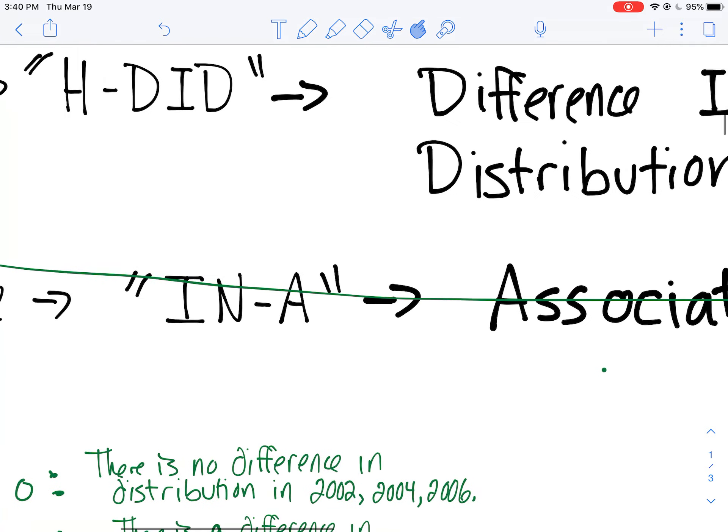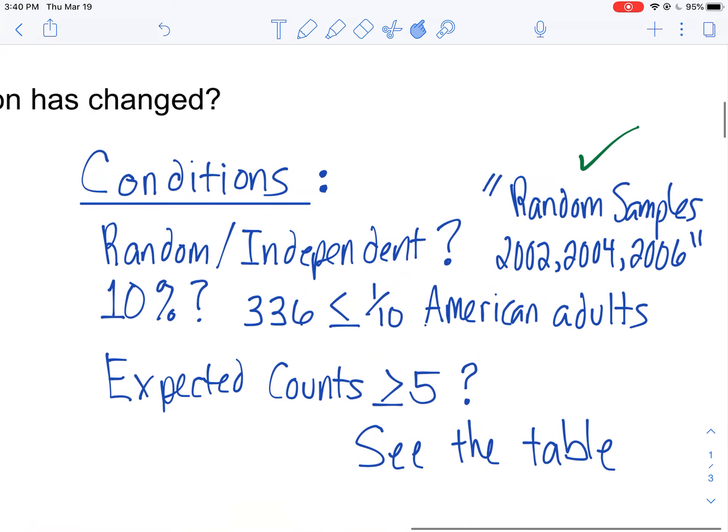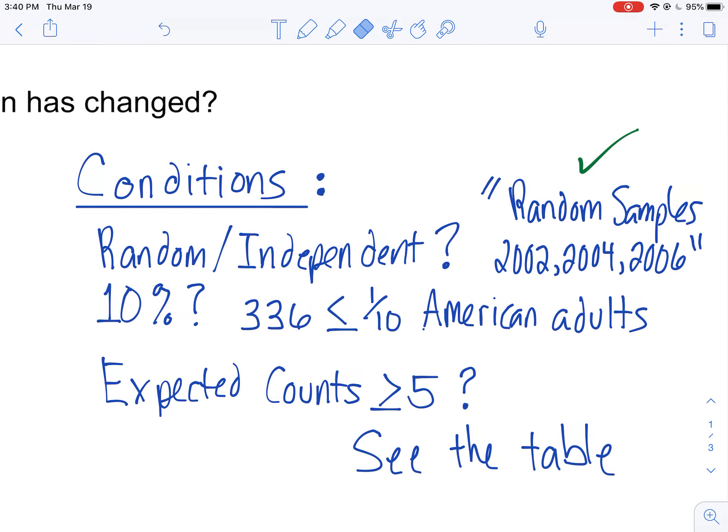Before I run my test, I always want to do my conditions. Check my conditions first here. Random slash independent: random samples from 2002, 2004, 2006. I got that checked. Set it up above.